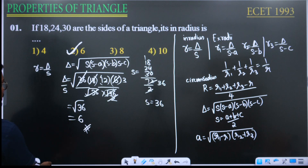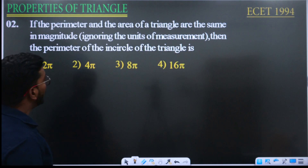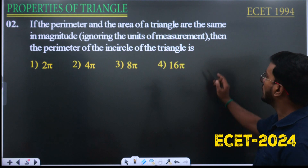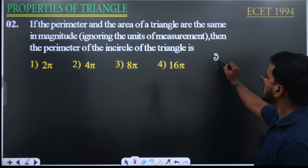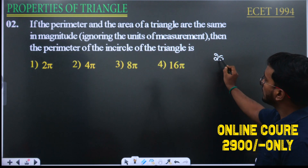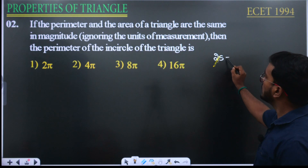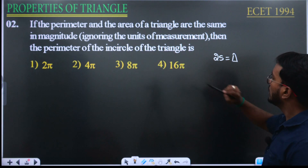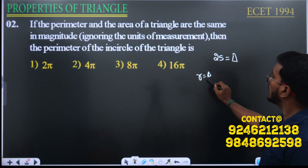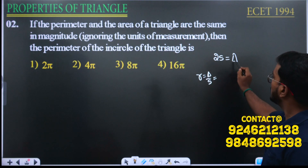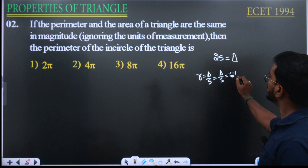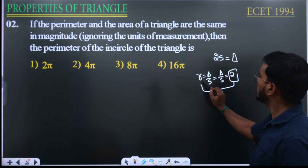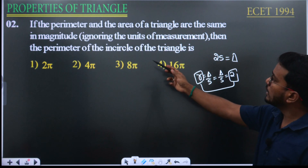Next question: if the perimeter and the area of a triangle are the same in magnitude. Perimeter is 2s, where s is the semi-perimeter. Area of a triangle is denoted by delta. We know r equals delta by s, so 2s equals delta, which means delta by s equals 2. Therefore r, the in-radius, equals 2.